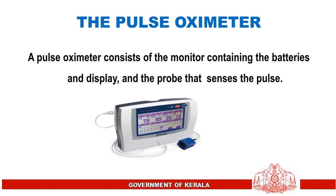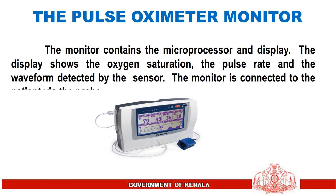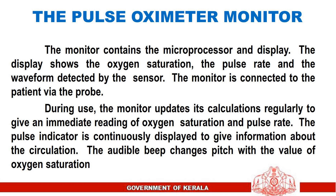The pulse oximeter consists of the monitor containing the batteries and display, and the probe that senses the pulse. The monitor contains the microprocessor and display. The display shows the oxygen saturation, the pulse rate, and the waveform detected by the sensor. The monitor is connected to the patient via the probe.